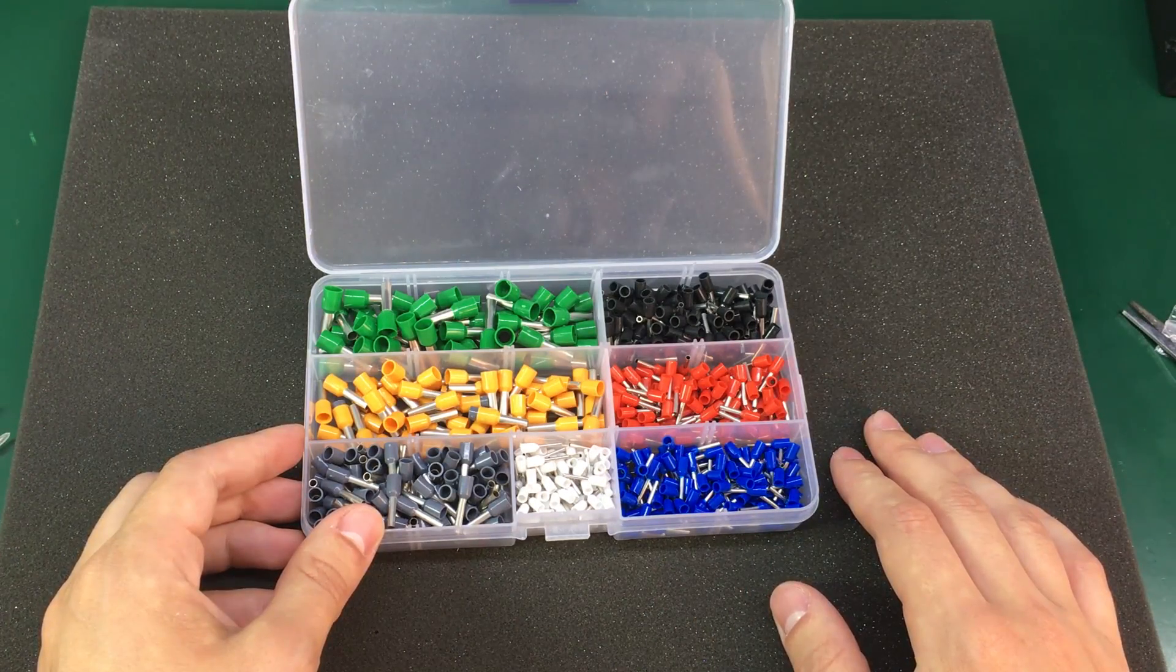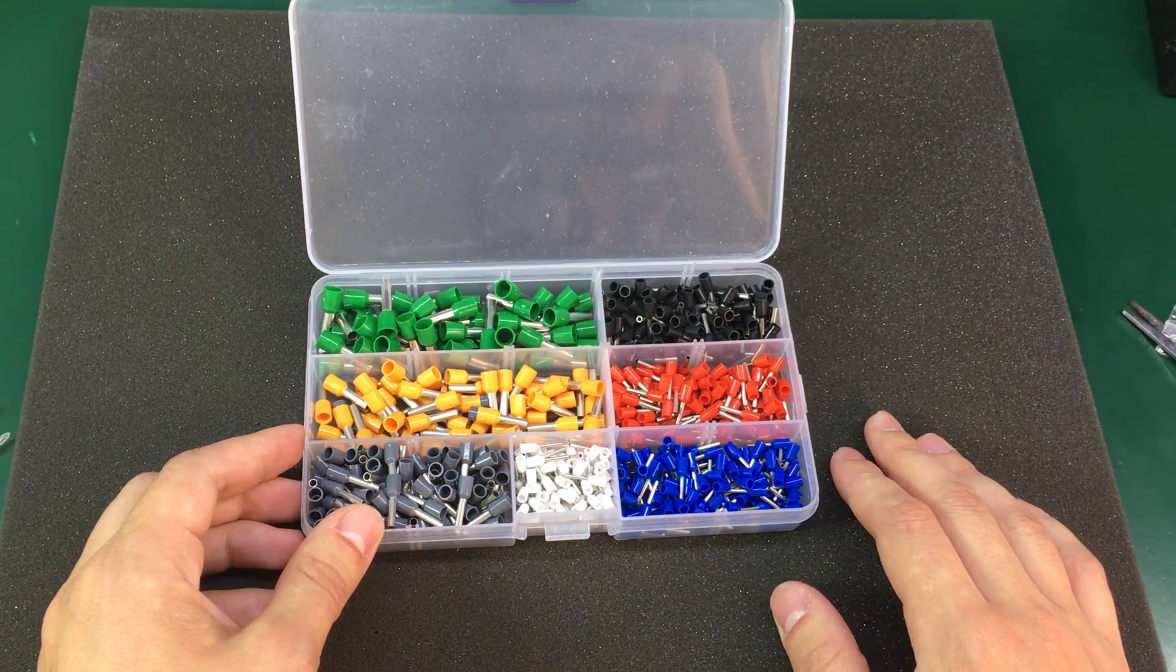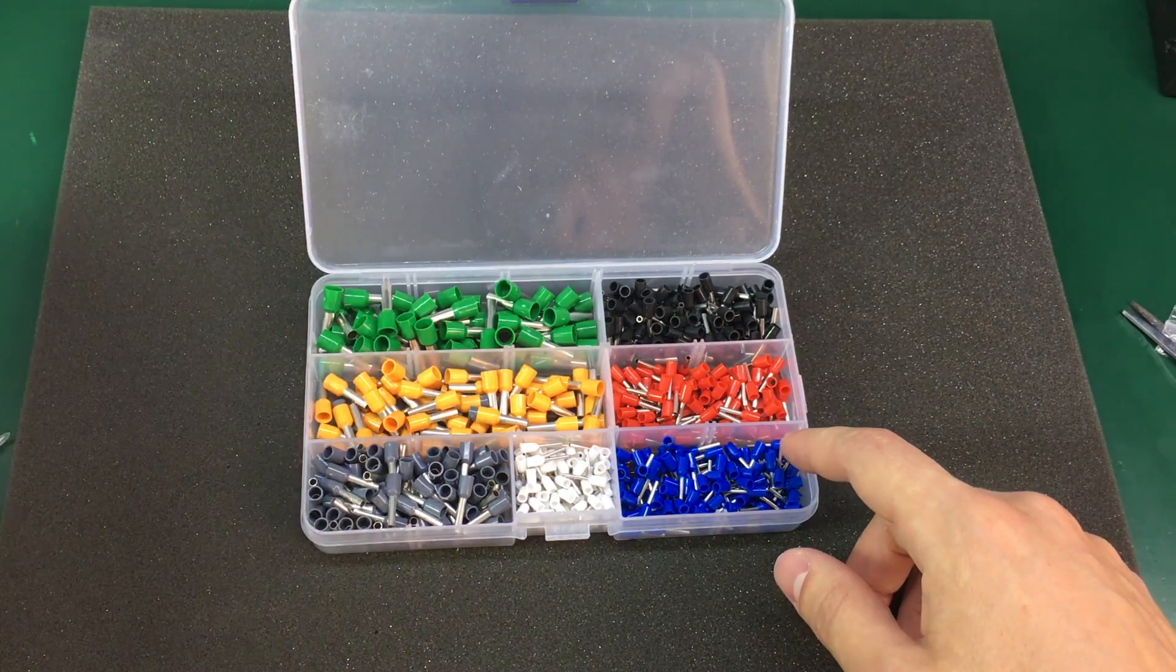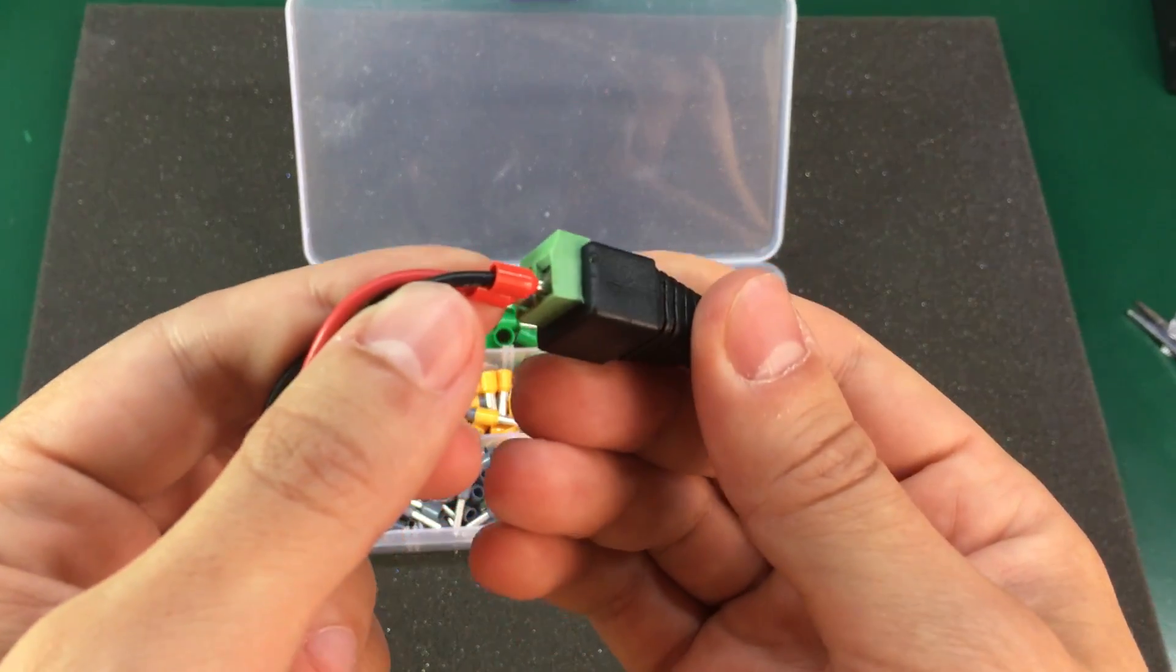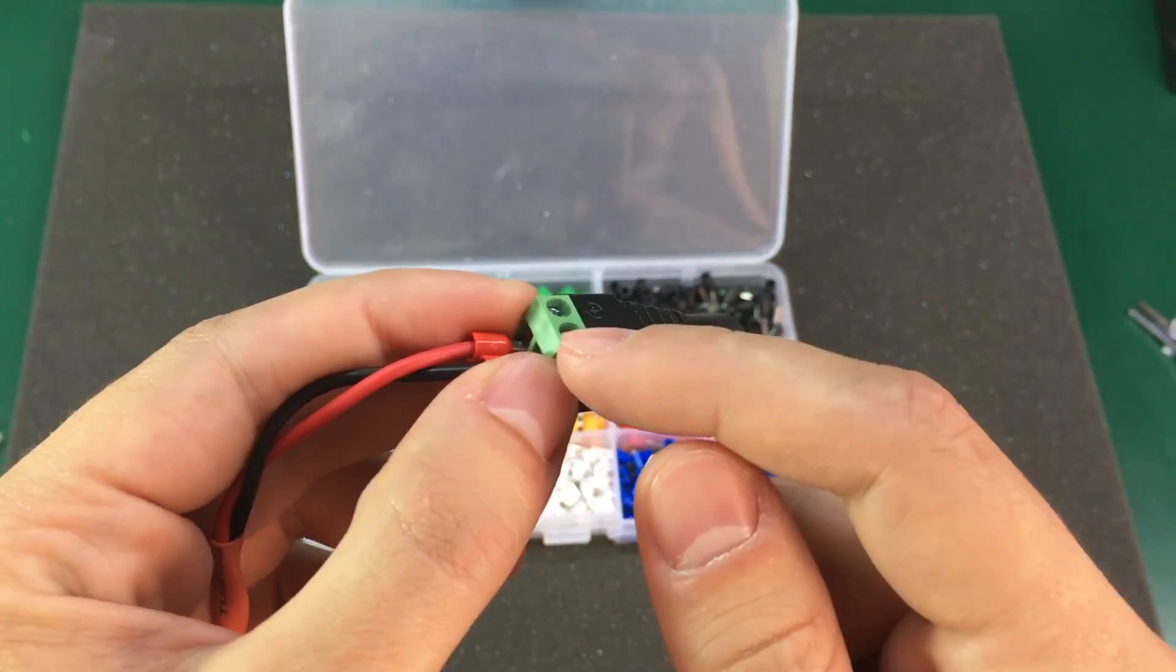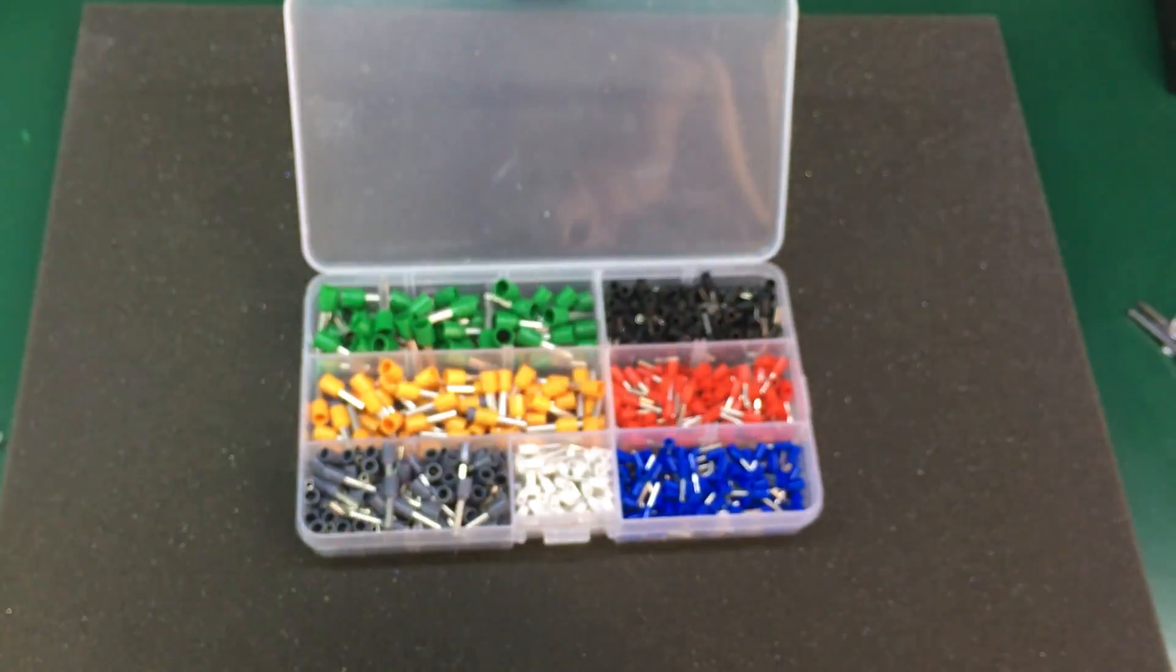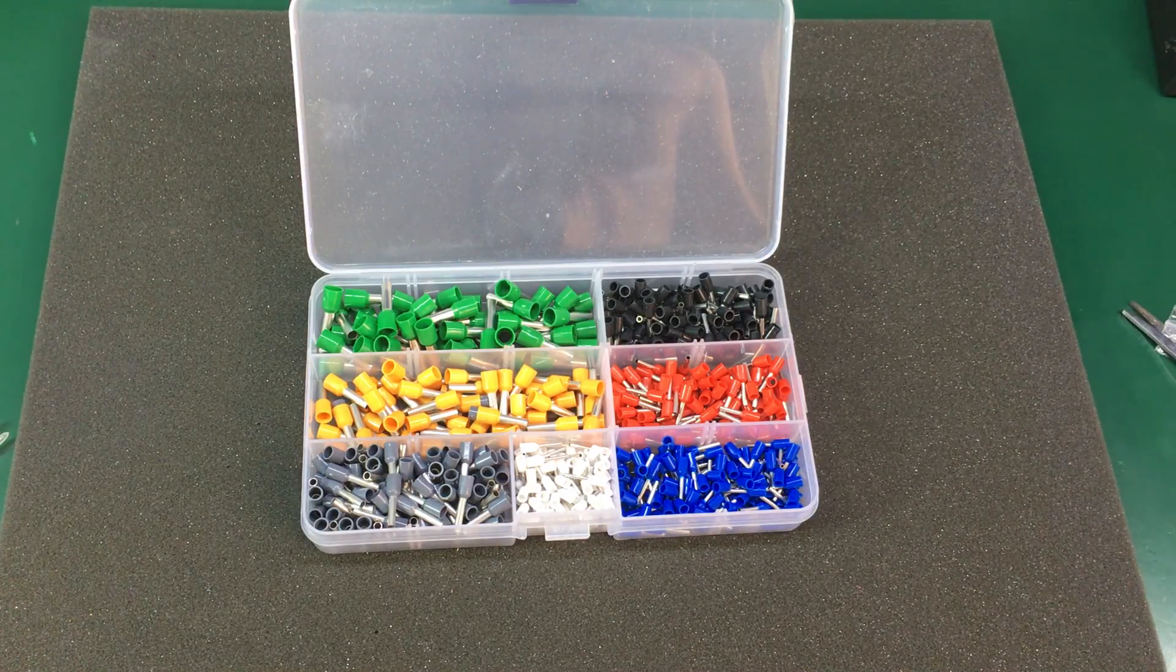Instead of thinning your wires before inserting them into a screw connector it's better to crimp the wires with these ferrules and then screw them in. You'll get better reliability over time this way.